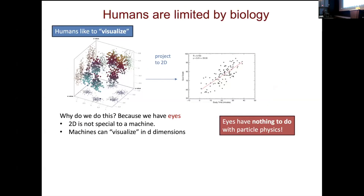What is our limitation? Why can't we do it? One thing is we're limited by our biology. We can only visualize by projecting data into two dimensions and drawing a line through it — but why do we do this? Because we have eyes and see in 2D projections. Machines don't do that. Machines can work in D dimensions. There's absolutely nothing special about 2D projections for machines — in fact, the word 'visualize' relates to eyes, which have nothing to do with high-energy physics. Forcing powerful machine learning techniques to be interpretable only if we can draw a line through it is, I think, misguided and will limit our ability to make progress.